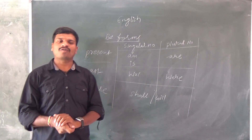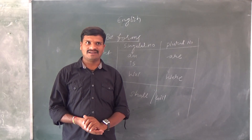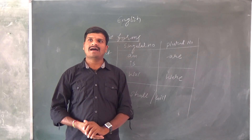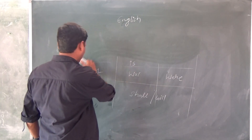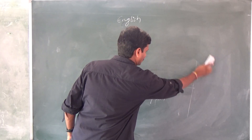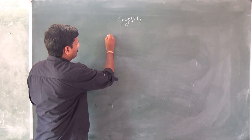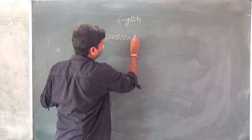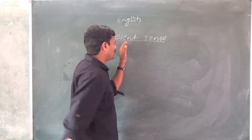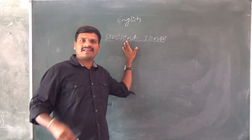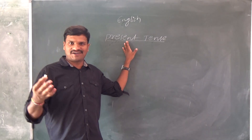Now we will discuss what is present tense, what is past tense, and what is future tense. In present tense, there are four kinds of forms. Yesterday we discussed that there are four forms: simple present, present continuous, present perfect, and present perfect continuous. So first we discuss the simple present.